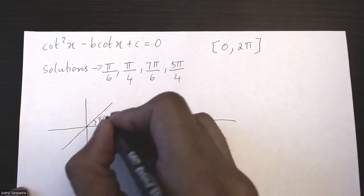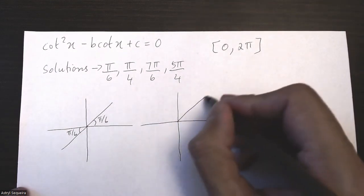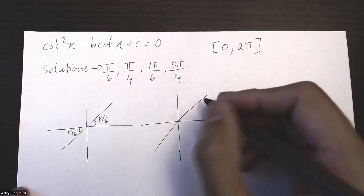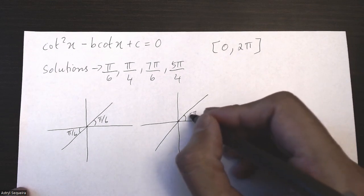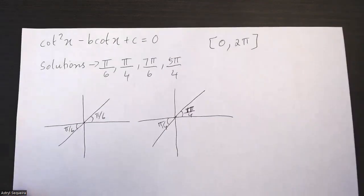And the second set is going to be π/4 and 5π/4, but the acute angle is π/4.